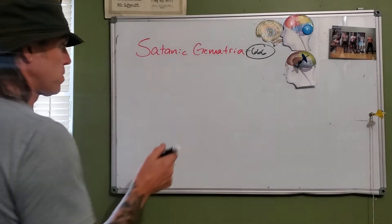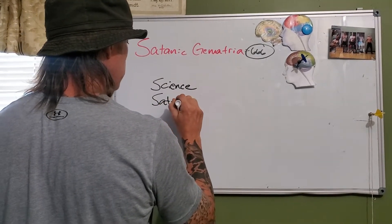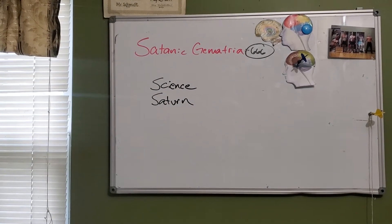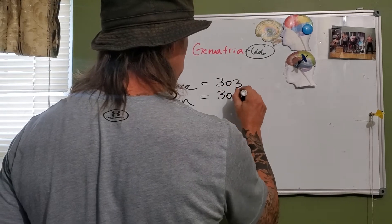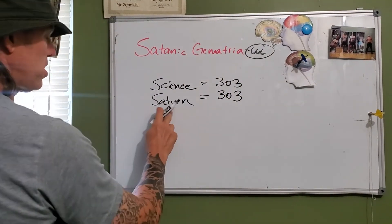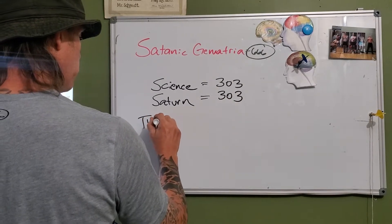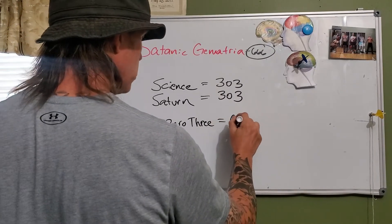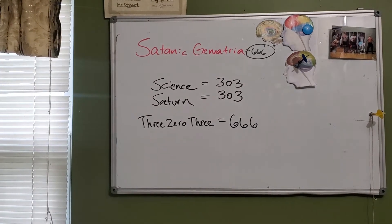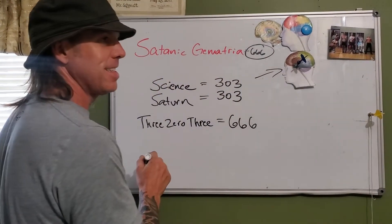Now we're going to key in 'science.' In satanic gematria both 'science' and 'Satan' equal 303. And when you write out three hundred and three — 303 — do you know what that equals? 666. So this is what you hear: 'science did that.' I'm showing you it's Satan. Your fake careers, those huge megastructures — you walk right under their symbol every day.